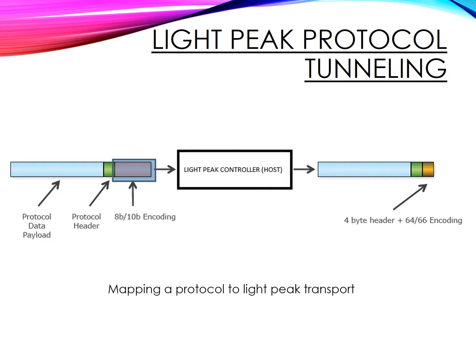Now let's look at how mapping a protocol to Light Peak transport takes place. The Light Peak host controller receives the encoded protocol data payload along with the protocol header. This is then line coded, mapping 64 bits of data as a 66-bit entity. The 66-bit entity is made by prefixing one of two possible 2-bit preambles to the 64 bits to be transmitted. If the preamble is 01, the 64 bits are entirely data. If the preamble is 10, an 8-bit type field follows 56 bits of data. Preambles 00 and 11 are not used. The 01 and 10 preambles guarantee that a bit transition takes place for every 66 bits, allowing for easier clock and timer synchronization. This line-coded data is then transferred over the optical fiber link.